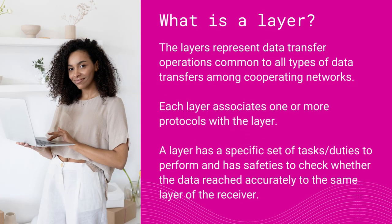Before we move any further, you must be wondering what a layer is. In computer communication, layers represent a set of data transfer operations common to all types of data transfers among cooperating networks. Each layer associates one or more protocols with the layer. A layer has a specific set of tasks or duties to perform and has safeties to check whether the data reached accurately to the same layer of the receiver. A layer accepts data from the immediate consecutive layer — either above or below the layer only — so there's no jumping.